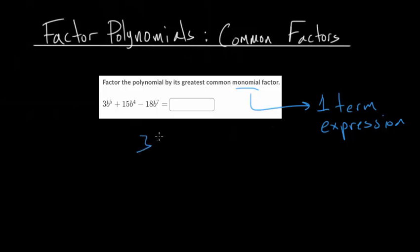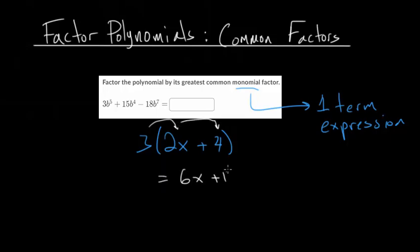With the distributive property, if you have 3 times (2x + 4), when we distribute we multiply the 3 into both of these terms and we get 6x + 12. Factoring is the reverse of this — we're basically starting from 6x + 12 and want to go back to 3(2x + 4). This idea has many different uses, which we'll see in future videos.